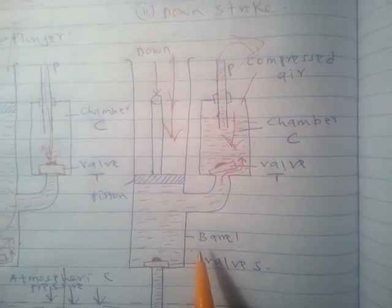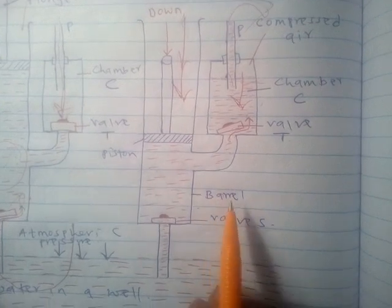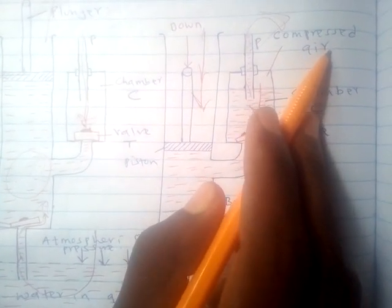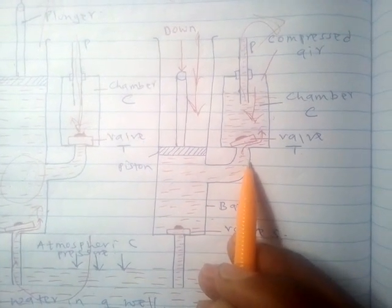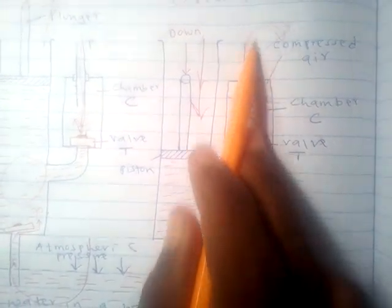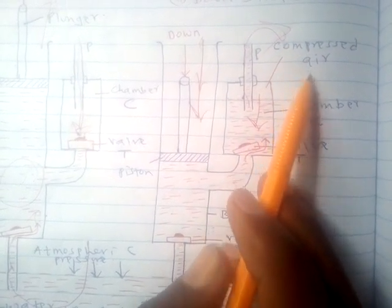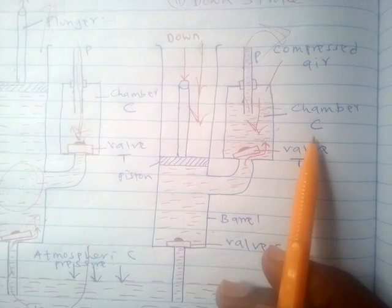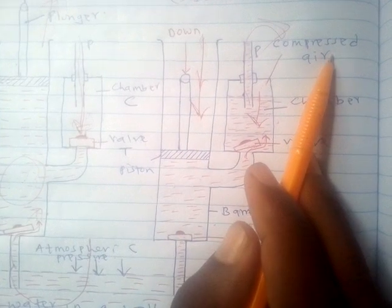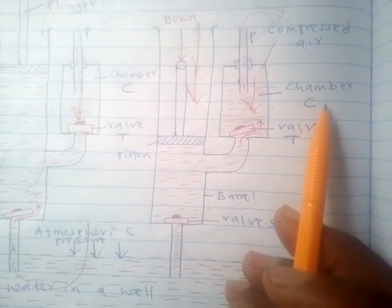The advantage of a force pump over a lift pump is that, because of the compressed air, it allows a continuous flow of water. Additionally, a force pump can raise water above the barometric height — that is, above 10 meters — because the height to which a force pump lifts water does not depend on gravity but on the force applied during the downstroke.